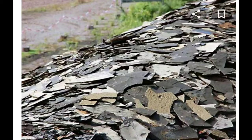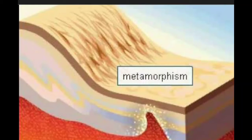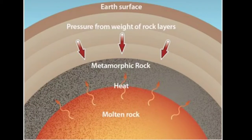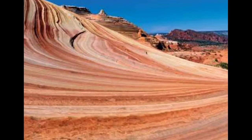Now let's study about metamorphic rocks. When a rock that is deep inside the earth is exposed to high temperature and pressure, it causes one type of rock to change into another. For example, marble — marble is formed when limestone is exposed to extreme heat and pressure. The word metamorphic means change, change from one rock to another kind.